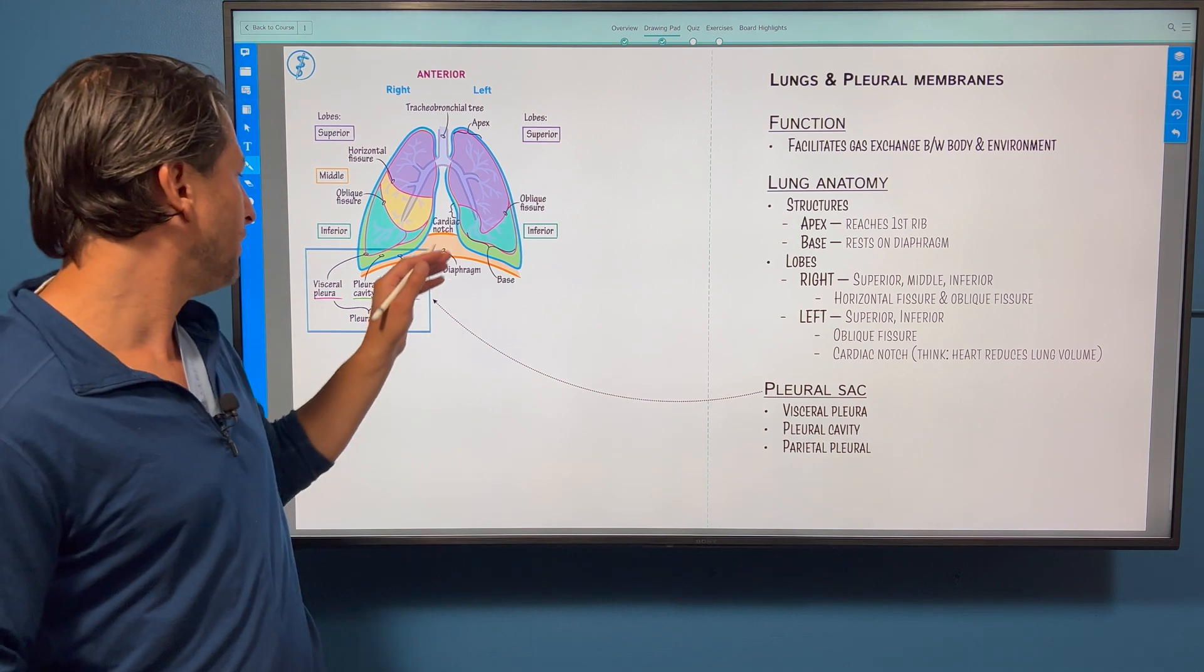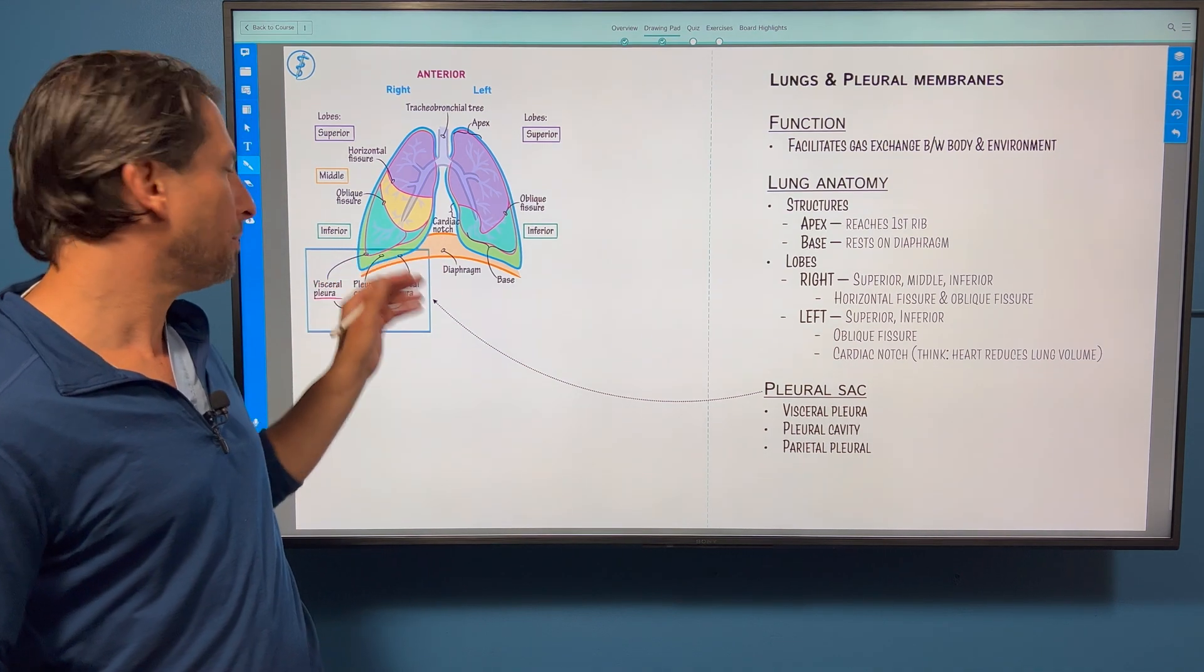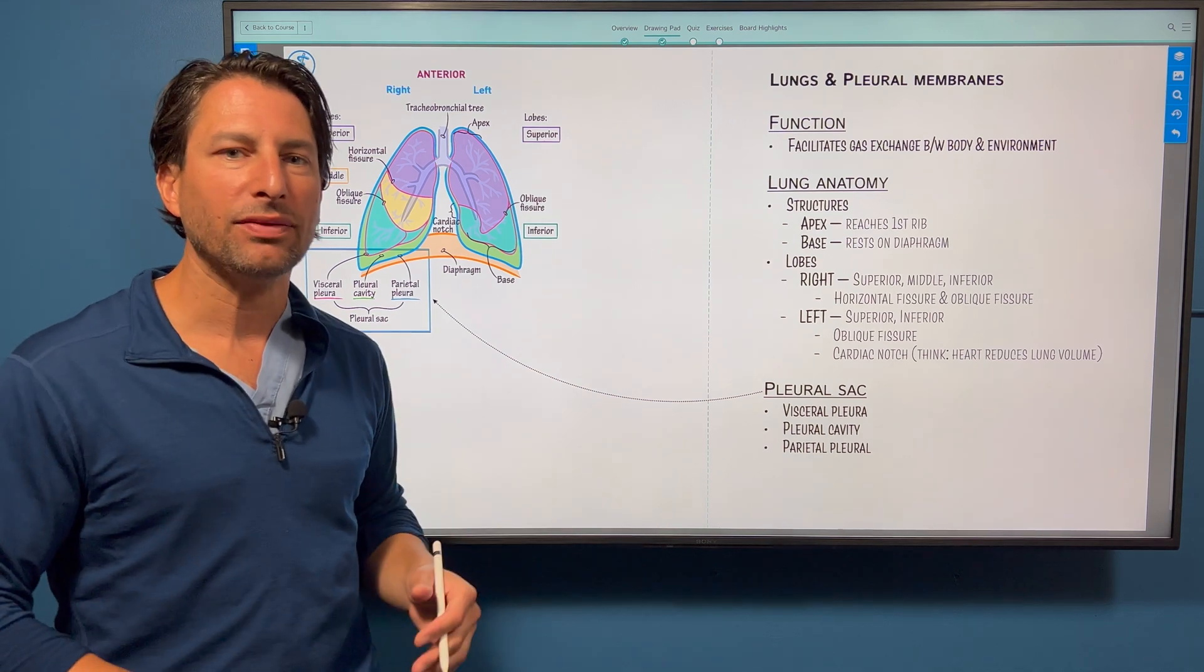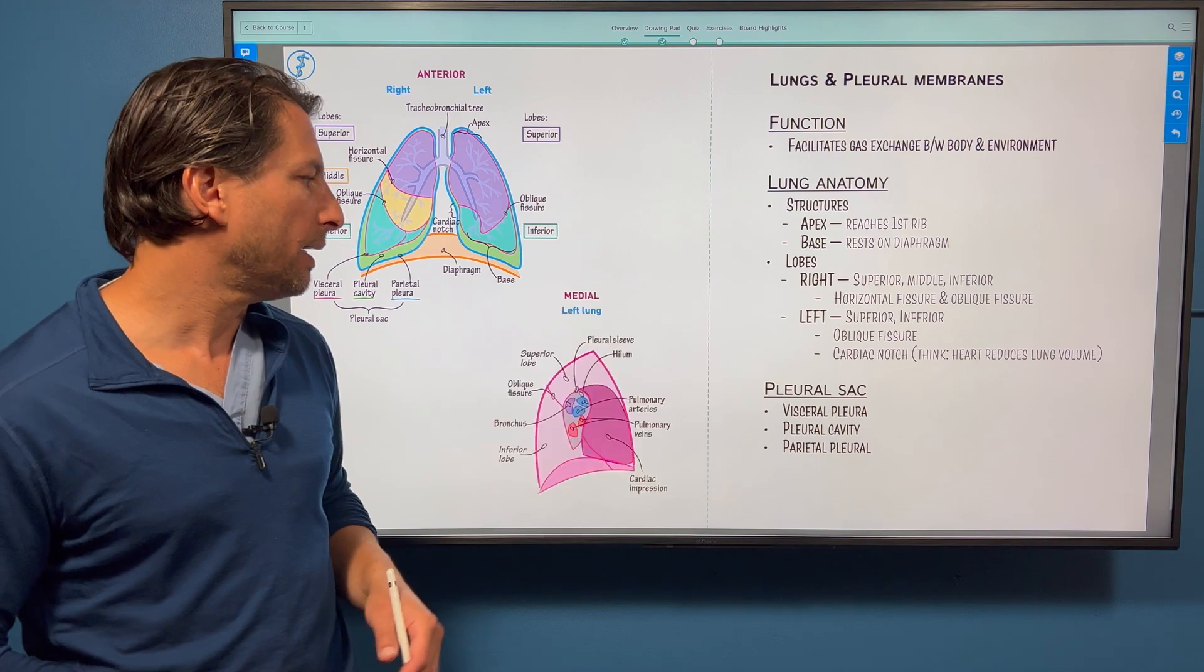This pleural sac has a parietal pleura here, pleural cavity, and a visceral pleura. This anatomy is key for understanding pneumothorax, which we discussed elsewhere on the site.